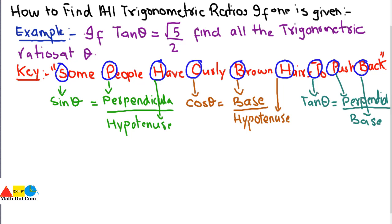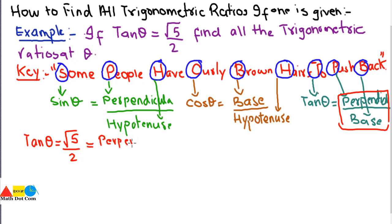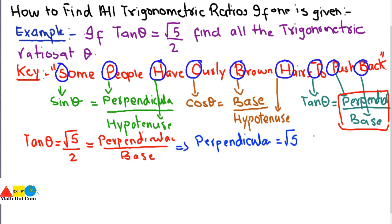This is how you can memorize the trigonometric ratios when asked to find all of them given only one. We were given tan theta equals root 5 over 2. From the mnemonic, tan theta equals perpendicular over base, so we can say that perpendicular is root 5 and base is 2. We now have the values of two sides of the right angle triangle.